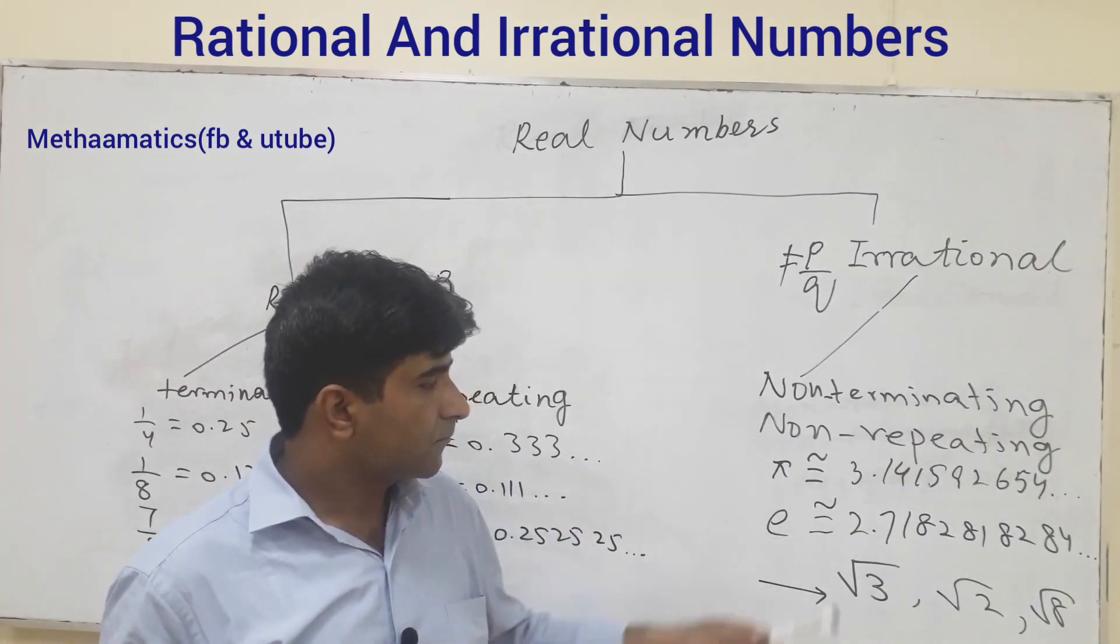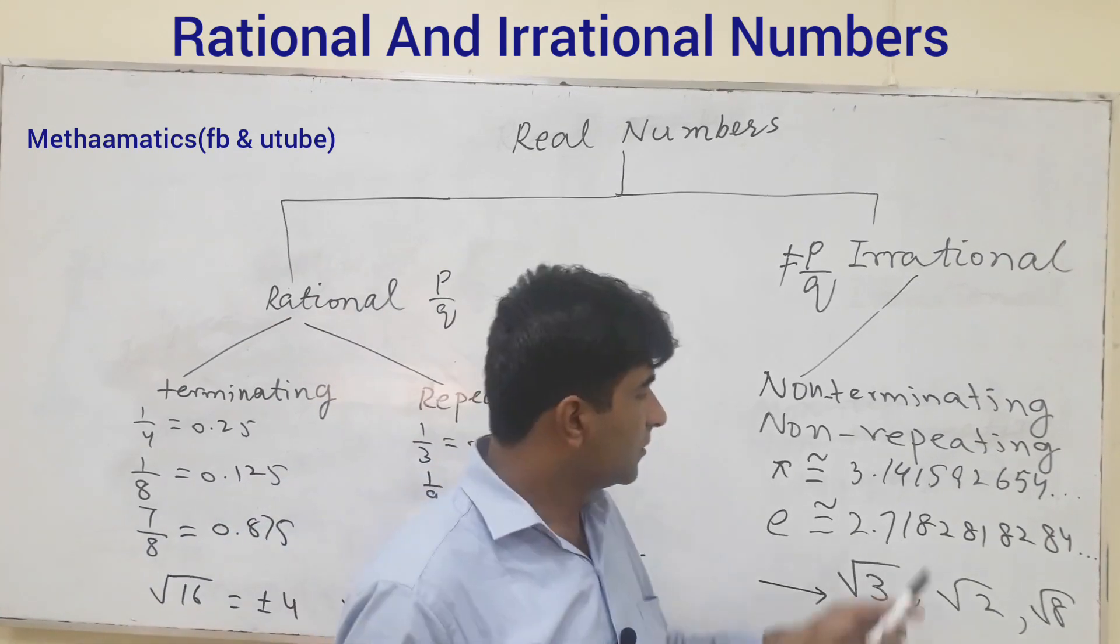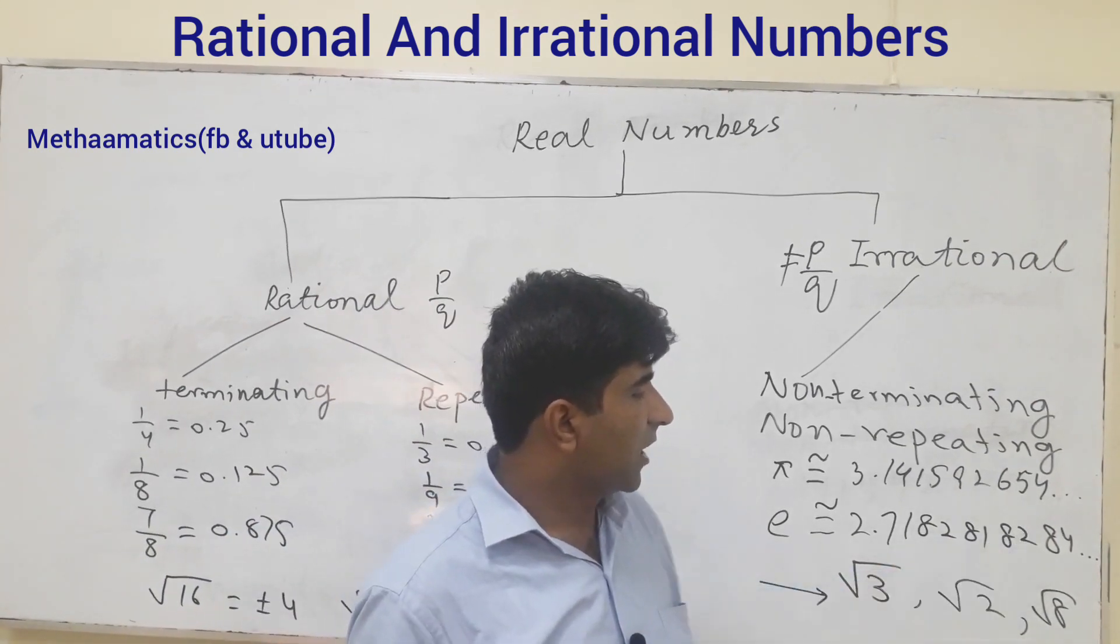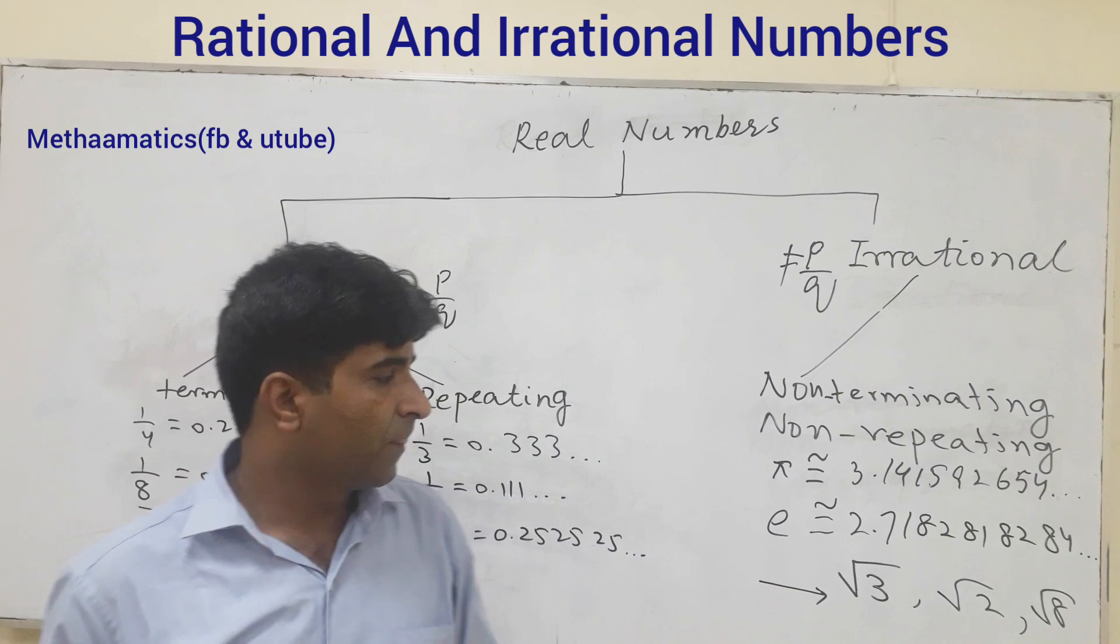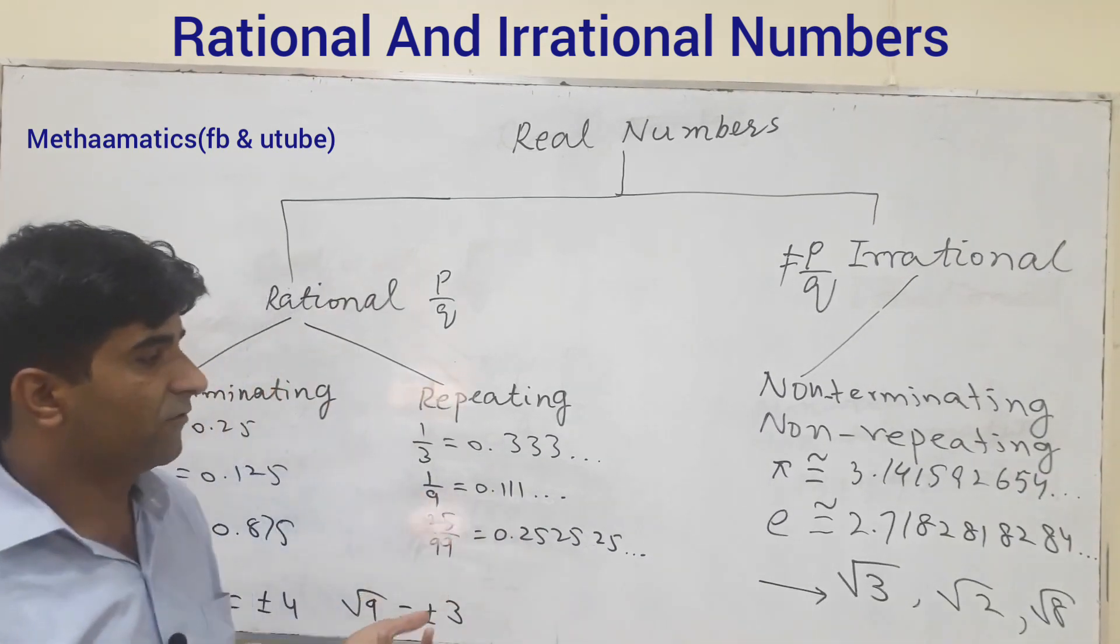Value of e, 2.718281828284, it continues. These are examples of irrational numbers.